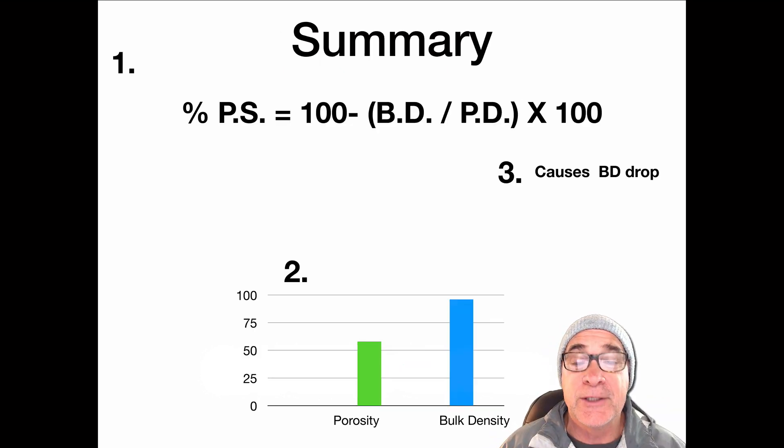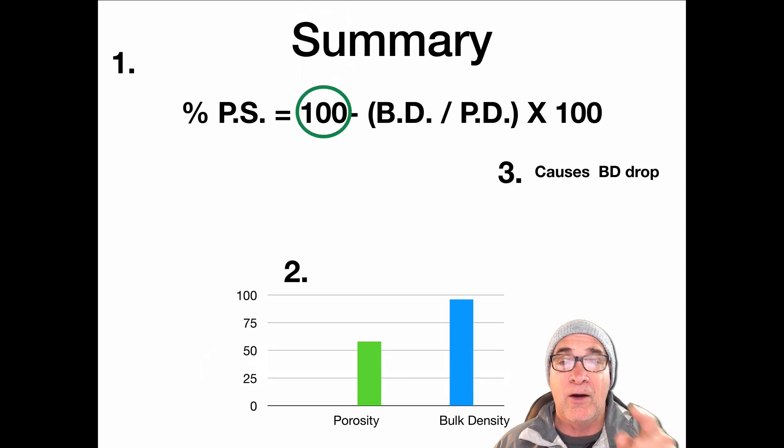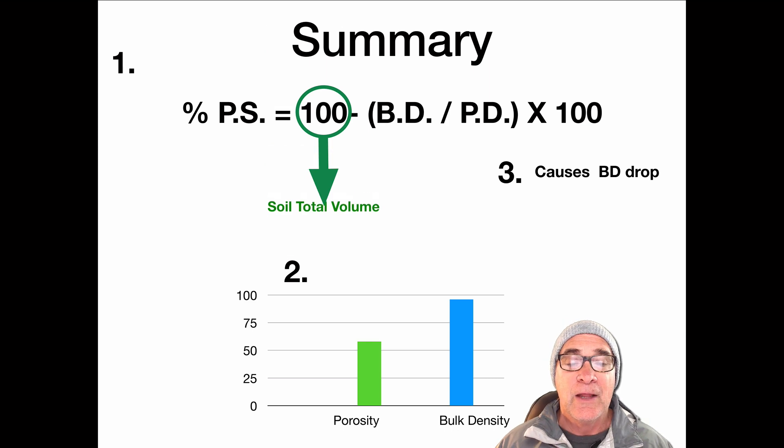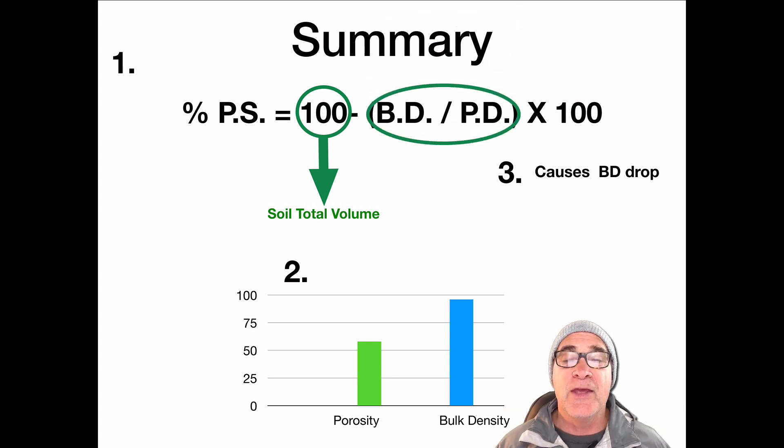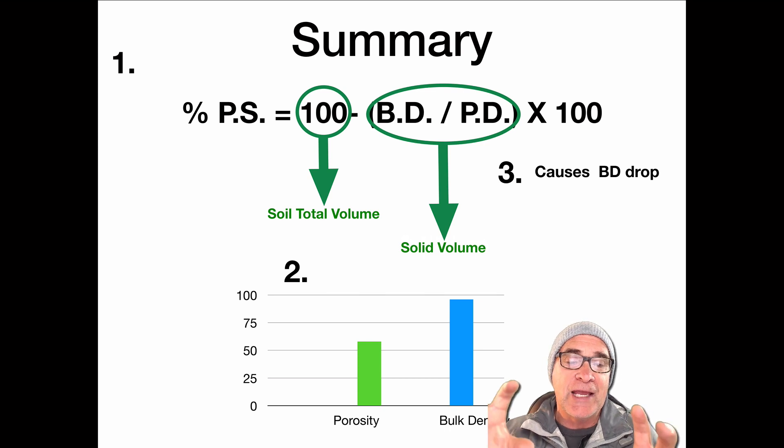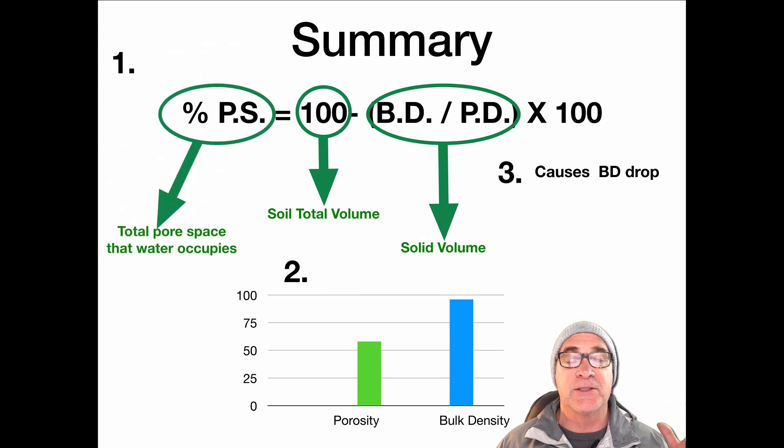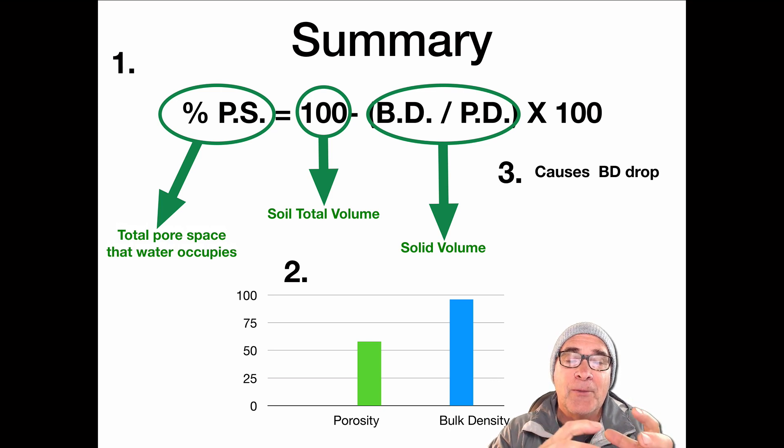So let's summarize what we learned today. Number one is that 100 in our equation really stands for the total soil volume. And that's the minerals, the solids, and also the pore spaces. So we take that into account. And then our bulk density divided by our particle density, what that has to do with is just the solid portion of it. So if we take out the solids by subtracting it by 100, which is the total, what we're going to have left really are just the pores, the pore spaces, the things that hold the water, the things that help get nutrients from the soil into the plant. And we want to try to keep as much of that as possible.